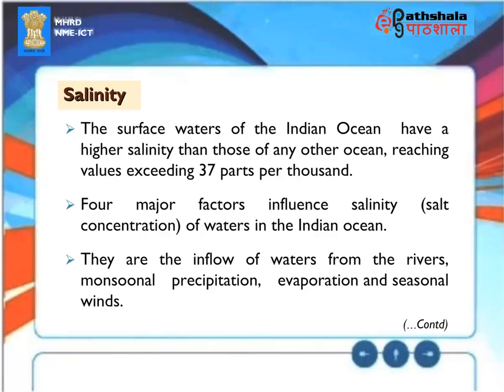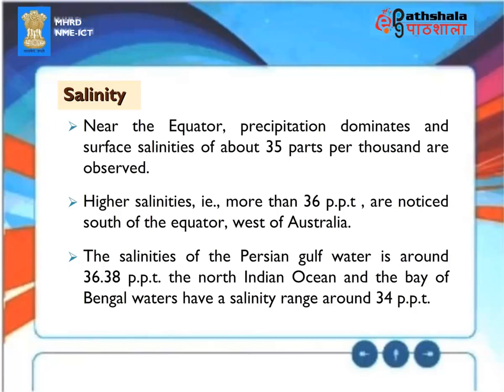Salinity. The surface waters of the Indian Ocean have a higher salinity than those of any other ocean, reaching values exceeding 37 parts per thousand. Four major factors influence salinity in the Indian Ocean: the inflow of waters from the rivers, monsoonal precipitation, evaporation, and seasonal winds. Near the equator, precipitation dominates and surface salinities of about 35 parts per thousand are observed. Higher salinities, more than 36 parts per thousand, are noticed south of the equator, west of Australia. The salinities of the Persian Gulf water is around 36.38 parts per thousand. The North Indian Ocean and the Bay of Bengal waters have a salinity range around 34 parts per thousand.